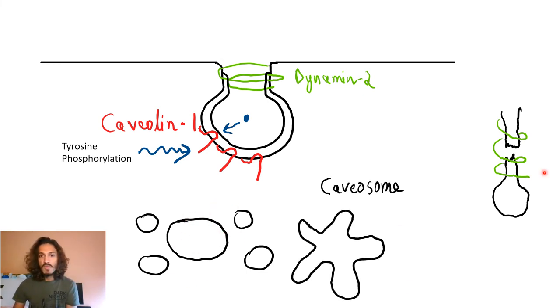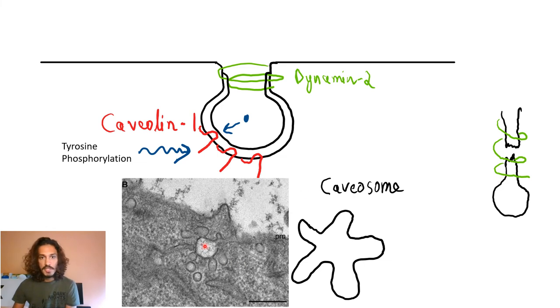These together fuse and form what is called a caviosome. This is not endosome, this is a caviosome. You can see over here the structure. This is the actual diagram of a caviosome.